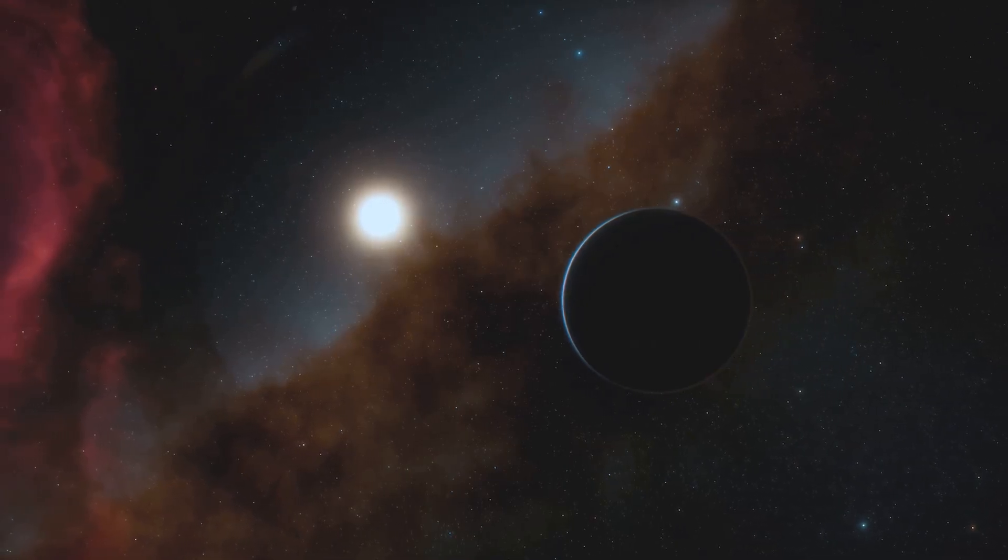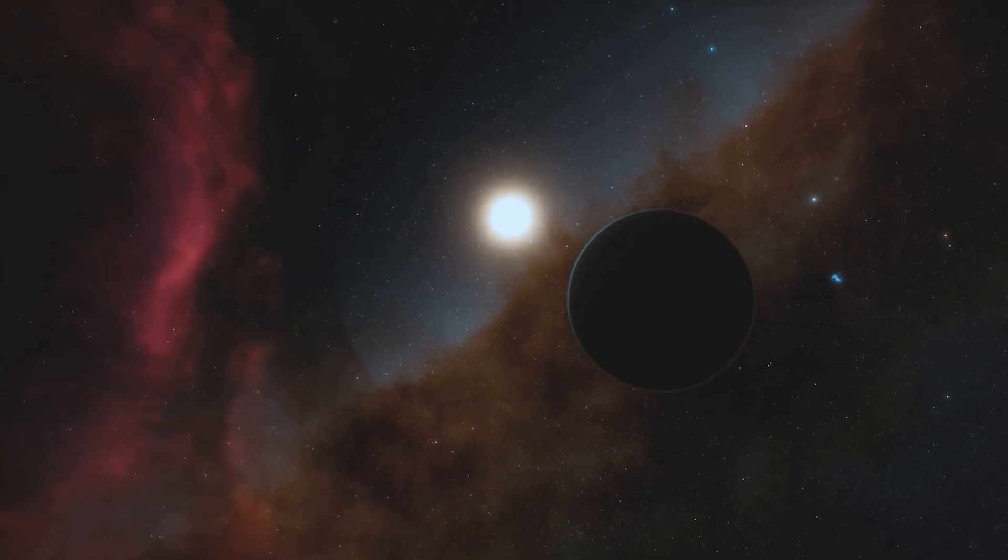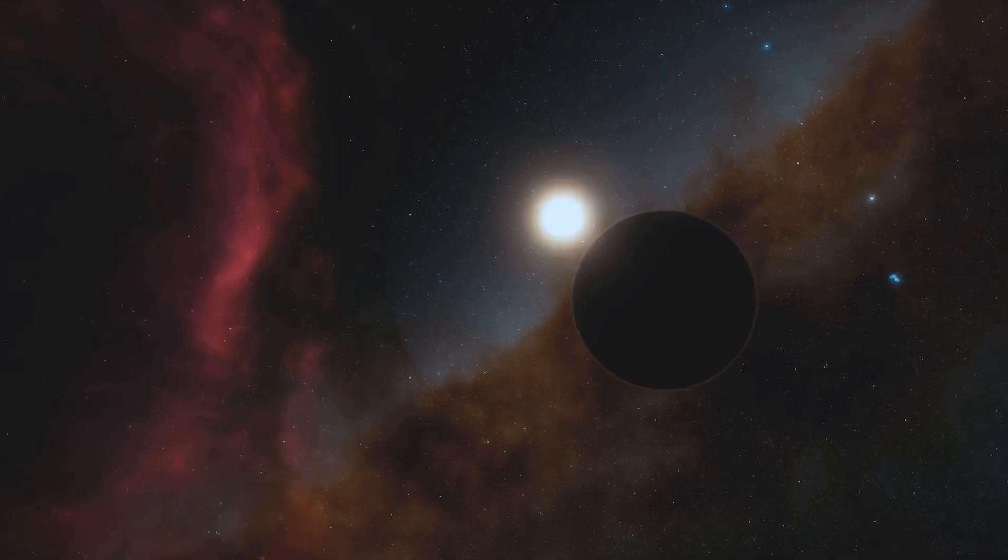Just 4.37 light years away lies Alpha Centauri, our closest stellar neighbor. But how do we even begin to reach a place so far, so alien, so impossible?